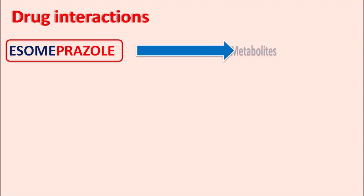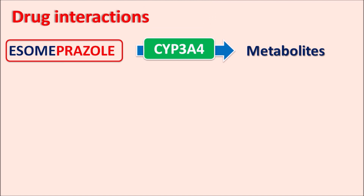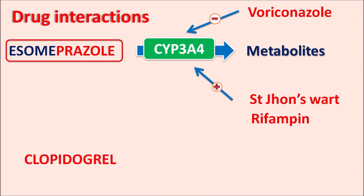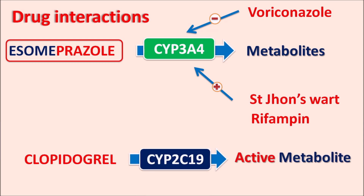Just like other proton pump inhibitors, S-omeprazole is metabolized by the cytochrome P450 system, particularly CYP3A4 and CYP2C19. Drugs such as voriconazole, an antifungal, act as strong inhibitors of CYP3A4, thereby inhibiting the metabolism of S-omeprazole. Drugs like St. John's Wort, an antidepressant, and rifampin, an antimycobacterial, act as inducers of CYP3A4, thereby increasing the metabolism of S-omeprazole. S-omeprazole can also interact with clopidogrel, an antiplatelet agent that is converted to its active metabolite by CYP2C19. S-omeprazole blocks this enzyme, resulting in decreased activation of clopidogrel and loss of antiplatelet activity.